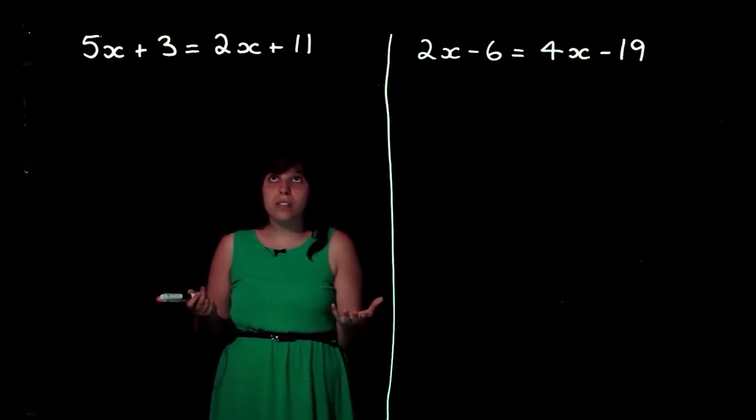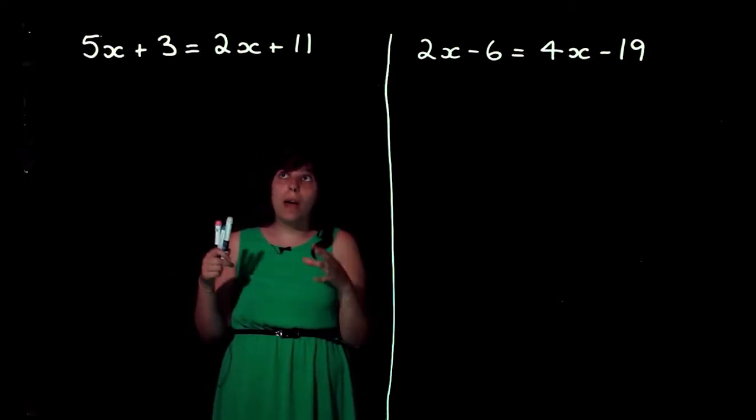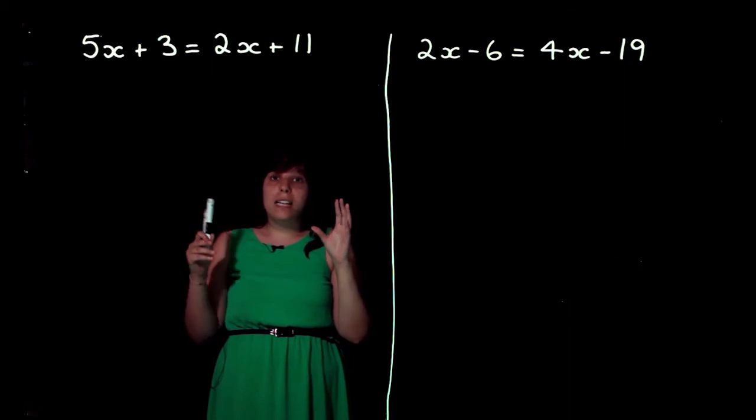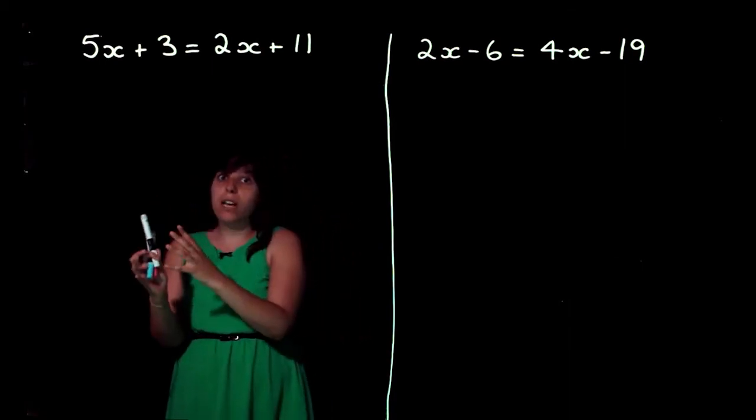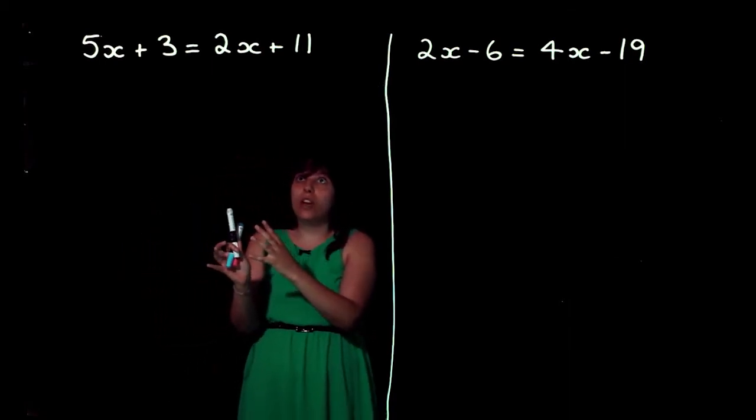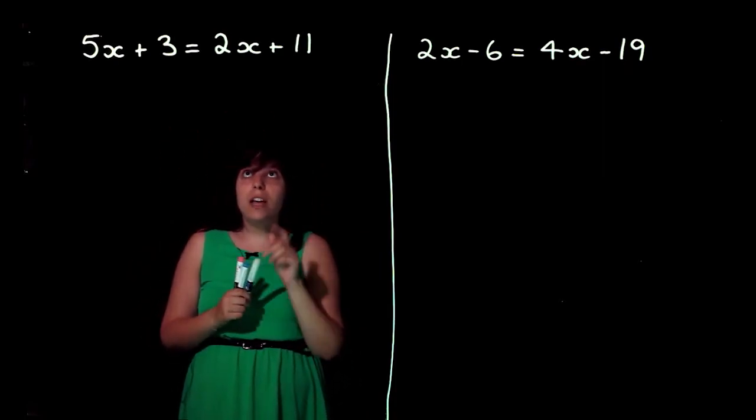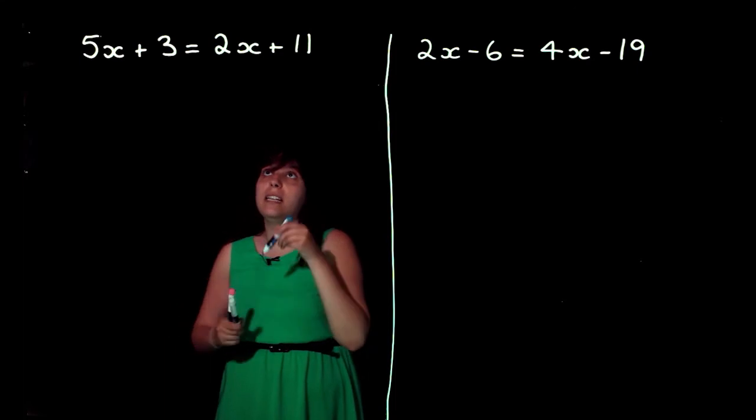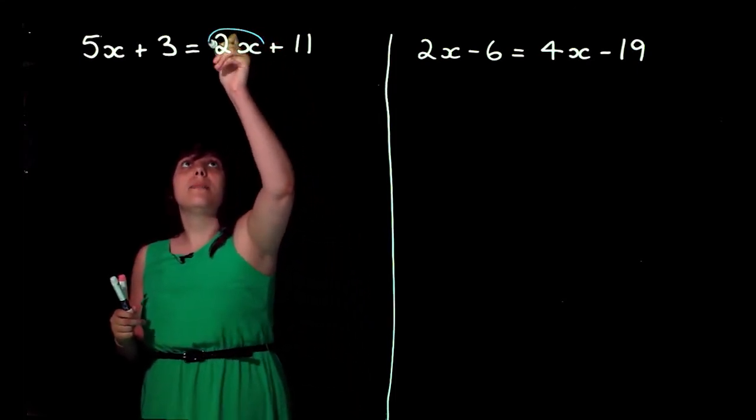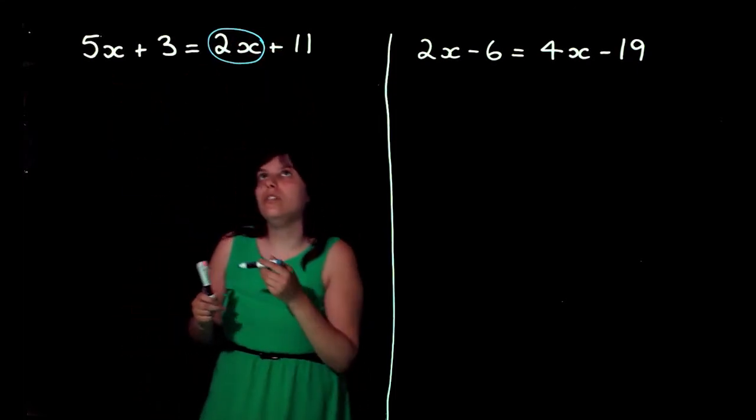Because we've got an x on both sides, we need to work out a way of setting it up so that we've got just one x on one side. So, what we need to do is look for the smallest x. Now, in this equation, our smallest x is 2x, because 5x is bigger than 2x.